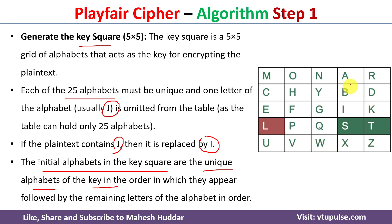For example, A is already placed, so the next letter is B. C is already considered, so we place D, then E, F, G is already considered, so we take I directly. J is not present. Next is K, L; M is already placed, and so on. This is how we form this key square.